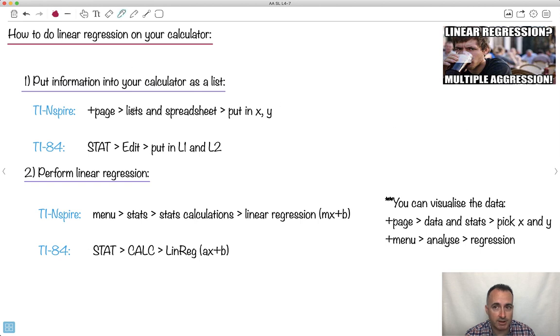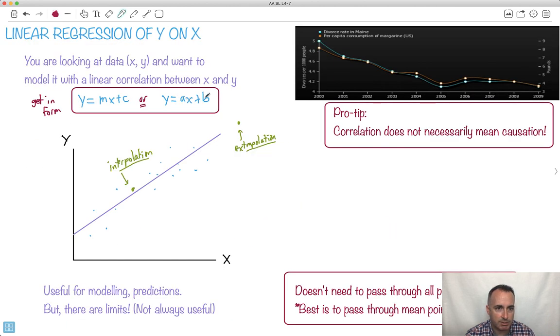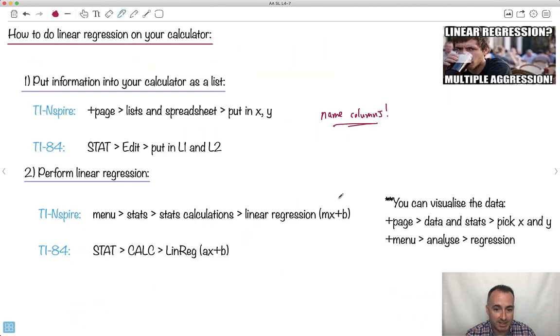Let's talk about how we can do this on our calculator. It's quite straightforward. Put stuff into list. That's step one. Step two is do a linear regression. If I'm on the TI Inspire, add a new page, do a list, put in your X and Y. Don't forget to name your columns. On the 84, go stat, edit, and put in L1 and L2. Those will be your X's and Y's. To do linear regression, on the Inspire you go menu and stats, do calculations, say linear regression MX plus B. TI-84, you can do stat, calc, linreg. You can also visualize it on both calculators.